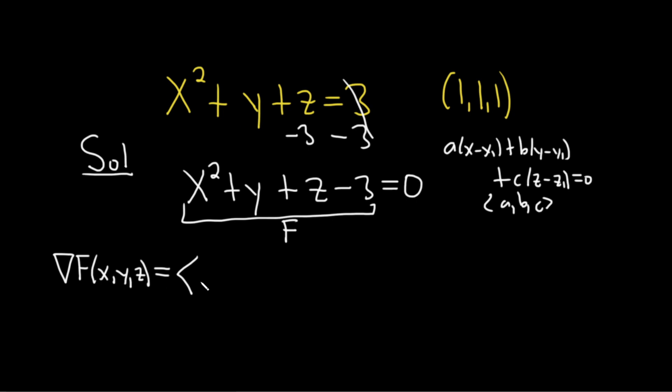So the first component of the gradient is the partial derivative with respect to x. In this case, it's simply 2x. The second component is the partial with respect to y, which in this case is 1. The third component is the partial with respect to z, which in this case is 1.